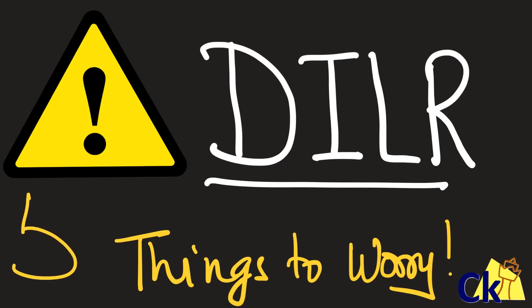Hi guys, there are five things to worry about in the DLR section, so while you plan your preparation, take care of all these things. With 30 days to the CAT exam, this is the high time when we start looking at the things to worry about as well. What can go wrong on the exam day, or what things need to be taken care of when you're solving the DLR section?